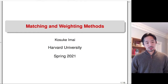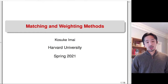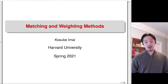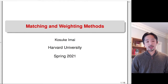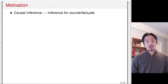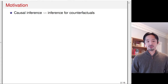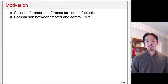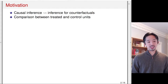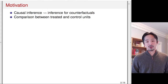In this lecture, we'll discuss matching and weighting methods, which are primary tools for analyzing observational data. As we have been studying, causal inference is the inference about the counterfactuals or potential outcomes. It's a comparison between treated and control units that allow us to estimate these counterfactuals.